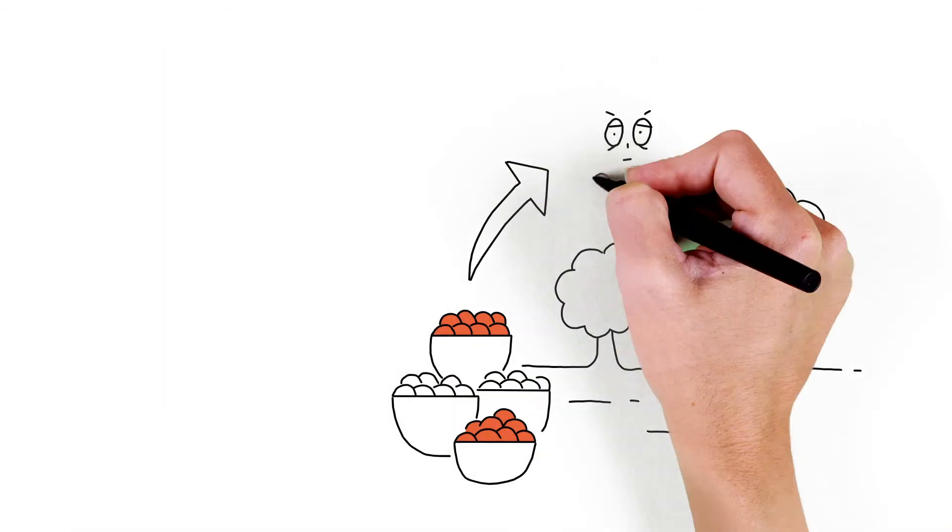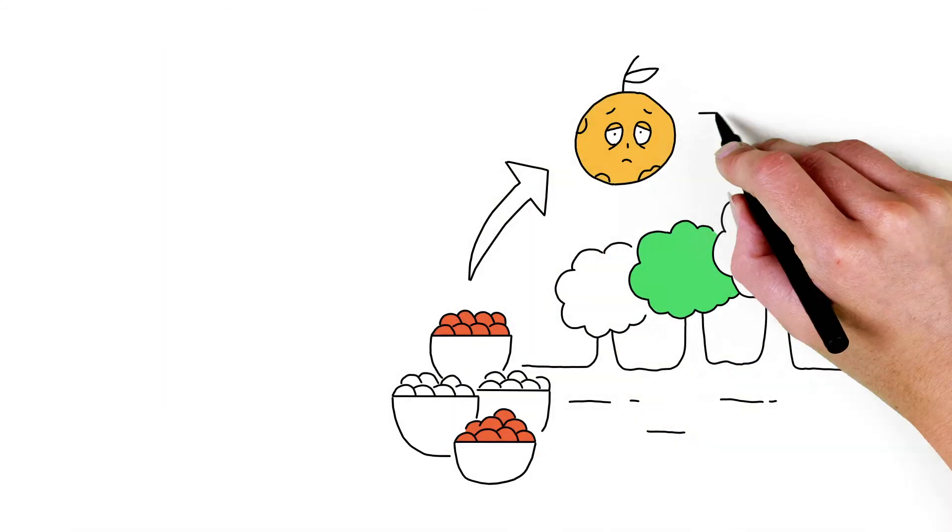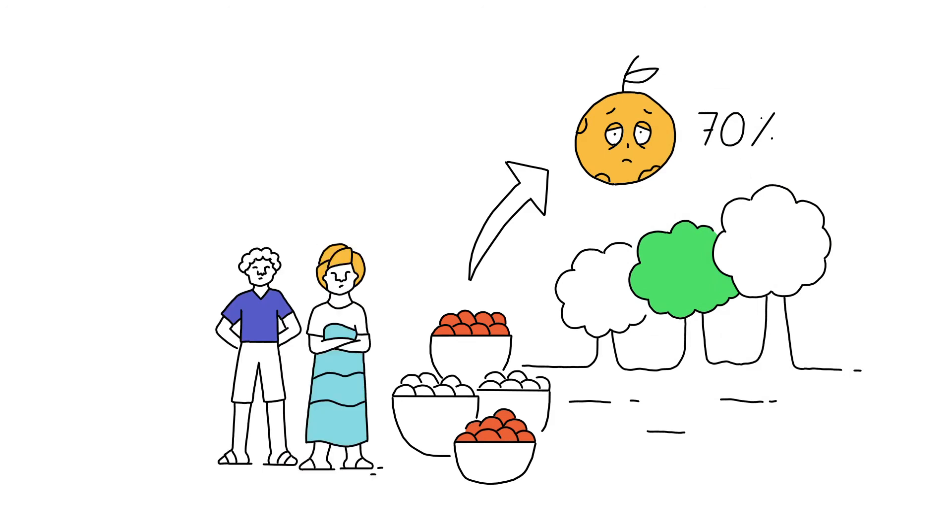Storage is challenging with oranges. Up to 70% spoil before Kofi or Aceba can sell them. The irregular harvest causes severe price fluctuations, making it difficult to plan for the long term.